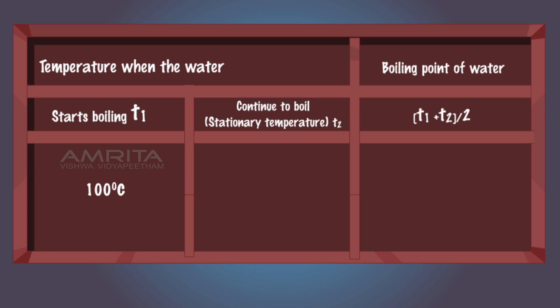The average of the two temperatures gives the boiling point of water. The boiling point of water is 100 degree Celsius.